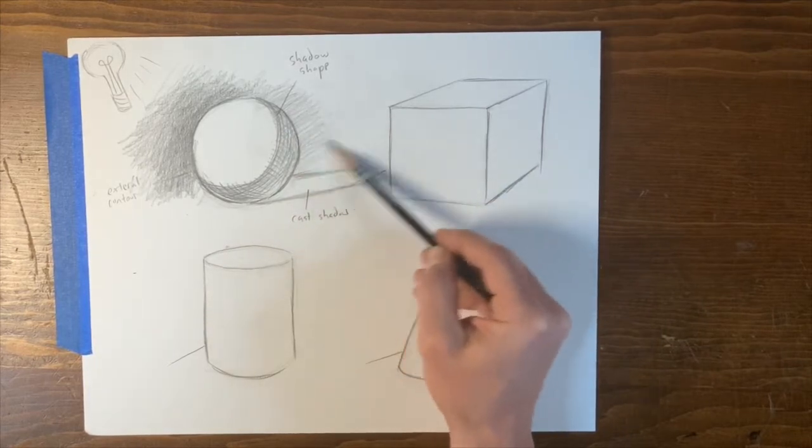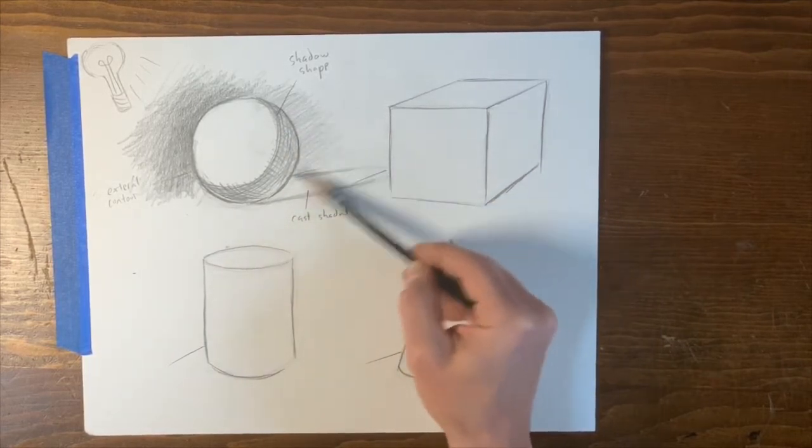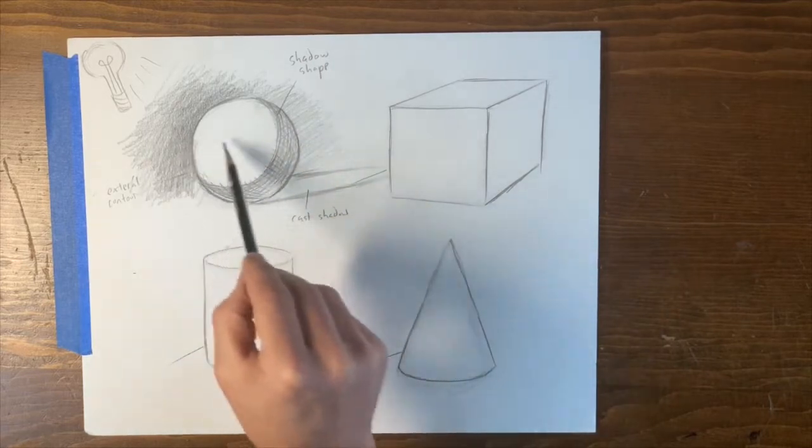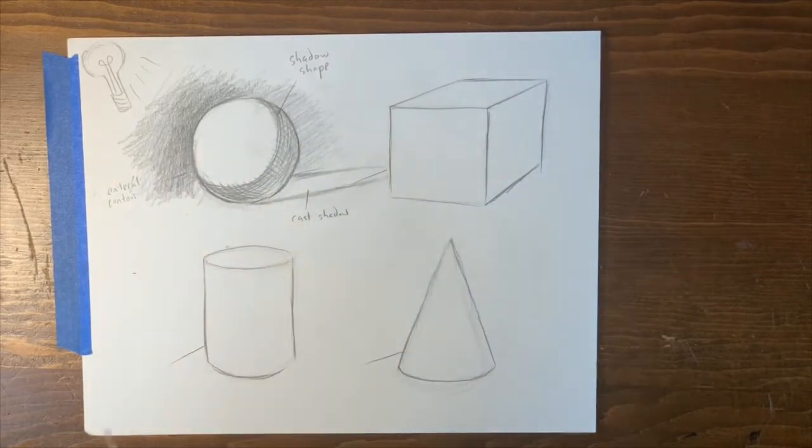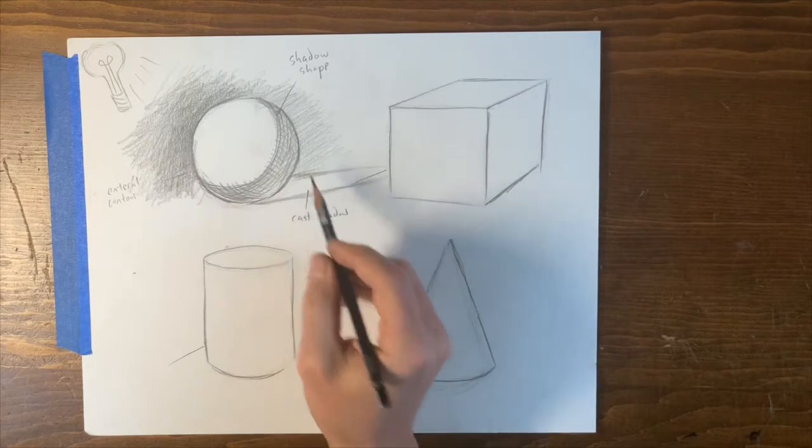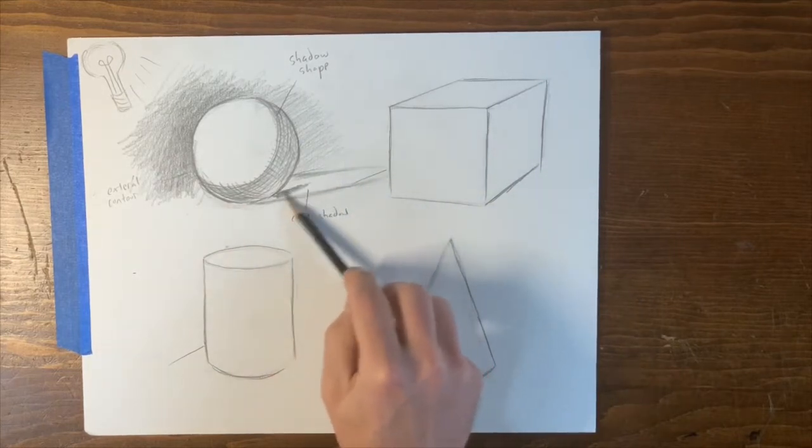As we are created, for whatever reason, our eye goes right here. When you look at this drawing, we don't immediately go right here. So now let's go ahead and put in that cast shadow. I'm going to get my dull pencil out.